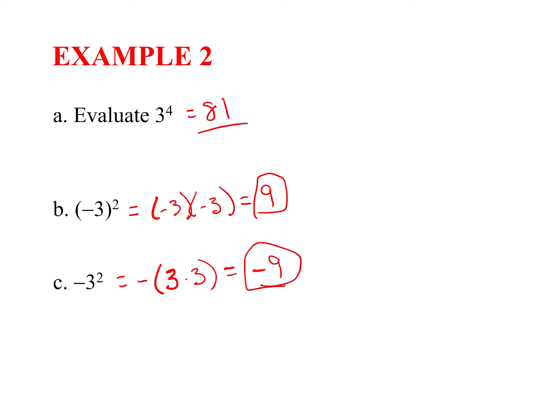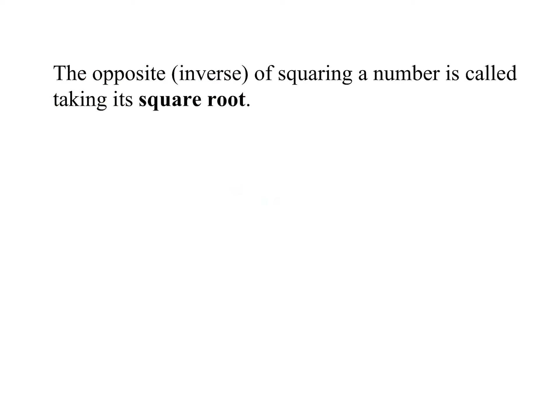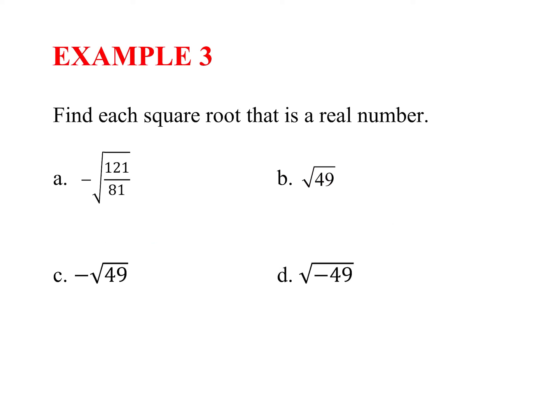Keep that in mind — your parentheses are very important. Next, we're going to look at square roots. Square roots are simply the opposite or the inverse of squaring a number. The square root of 36 is 6 because 6 squared equals 36 — you think about what square gives you the number. We write them with the square root sign. Let's do some examples of finding square roots.